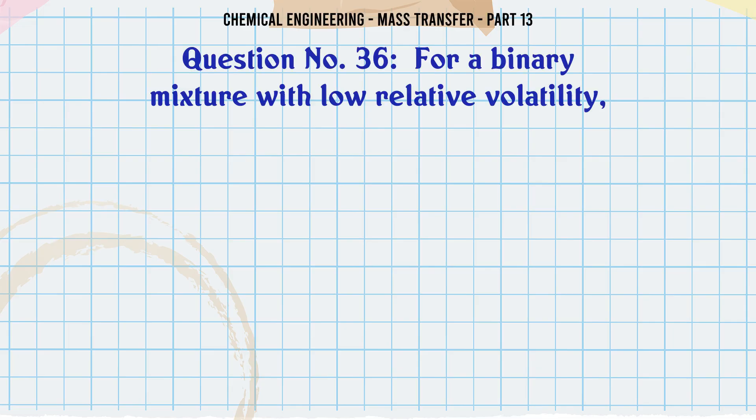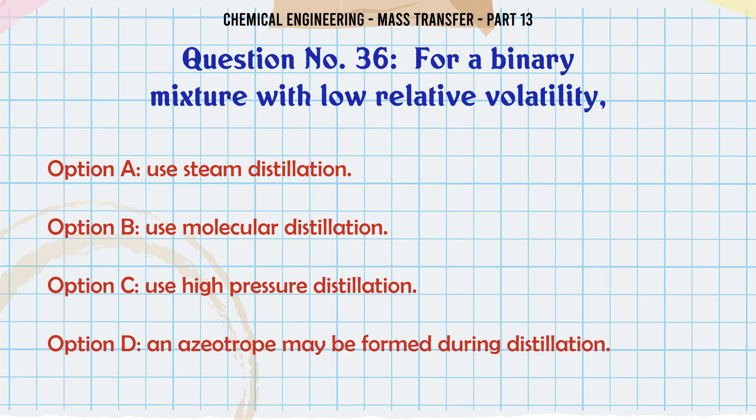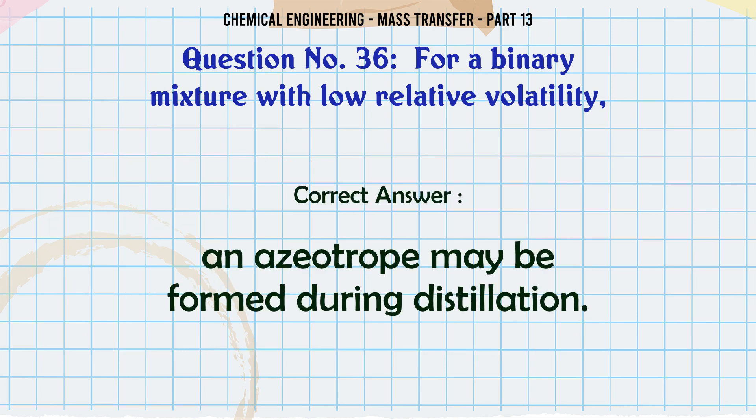For a binary mixture with low relative volatility: A. Use steam distillation. B. Use molecular distillation. C. Use high pressure distillation. D. An azeotrope may be formed during distillation. The correct answer is: An azeotrope may be formed during distillation.